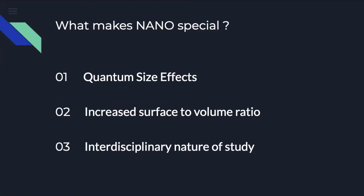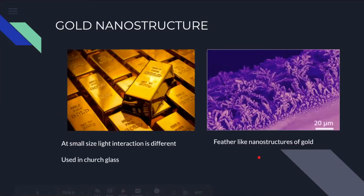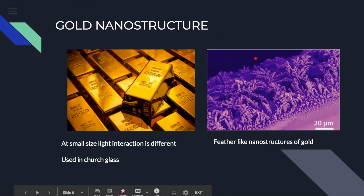Why is all this special about nano? Because of its quantum size effects, increased surface to volume ratio, and the interdisciplinary nature of study. Just to keep you informed, gold nanostructures change their properties, especially color, when reduced to nanoscale.